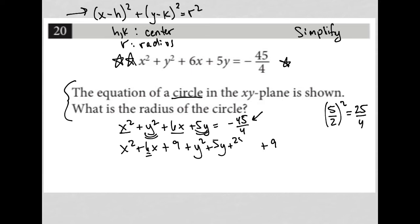So I add 25/4 and this is going to equal 9 + 25/4 to this side for balance, and I still have that -45/4 which was there originally.